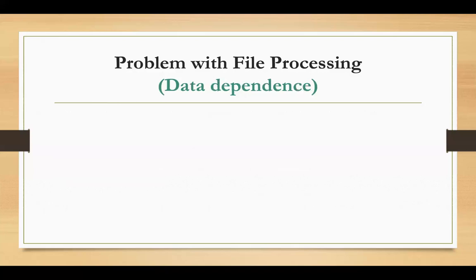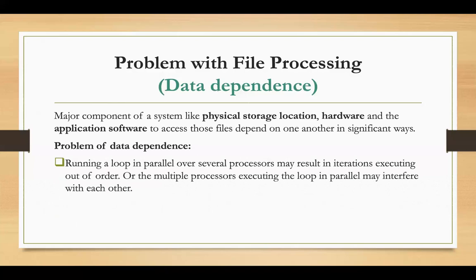The second problem is data dependence. A major component of file systems — like physical storage location, hardware, and application software — are used to access files and depend on one another in a significant way. So there is data dependence on the application. If there is any change in the application, the data changes accordingly, and the access points are tied to the physical location, hardware, and application software.